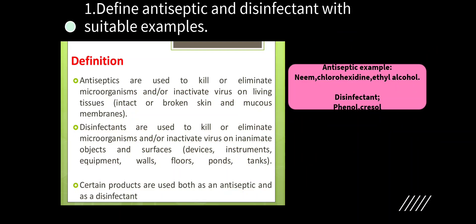The first question: define antiseptic and disinfectant with suitable examples. Antiseptics are chemicals used to kill or eliminate microorganisms or inactivate viruses on living tissues. Disinfectants are used to kill or eliminate microorganisms or inactivate viruses on inanimate objects — non-living things like devices, instruments, equipment, walls, floors, etc. Certain products are used as both. Examples for antiseptic: neem, chlorhexidine, ethyl alcohol. Examples for disinfectant: phenol and cresol.